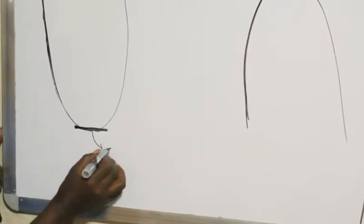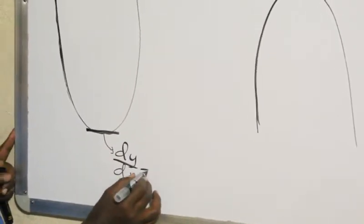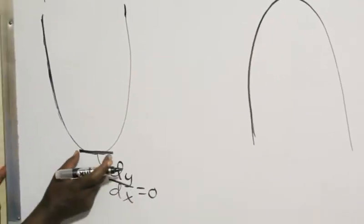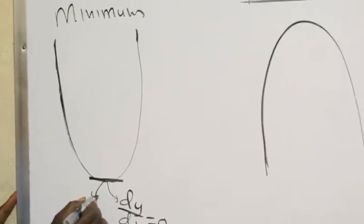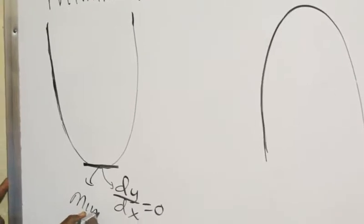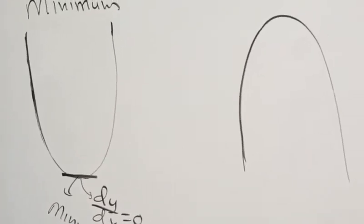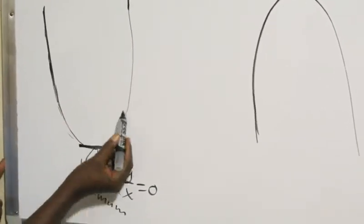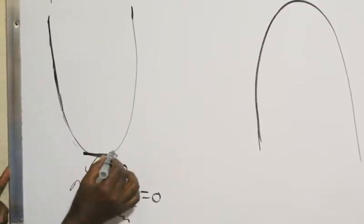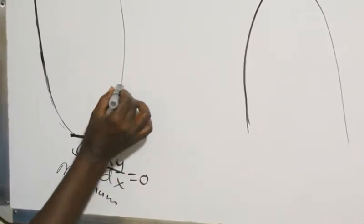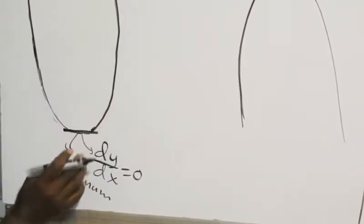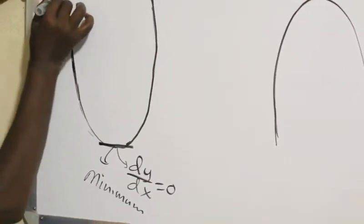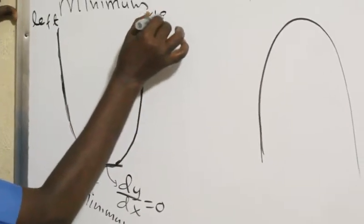We must have dy/dx equal to zero. When the function is increasing, the derivative is positive. When it is decreasing, the derivative is negative. They have an increasing amount, and that increase means the gradient is positive.